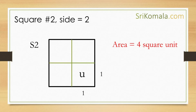Secondly, let us see square number 2, whose sides are 2 unit length, as shown in the diagram. Then, as can be understood from the diagram, by counting the number of unit squares inside square number 2, therefore the area of square number 2 is 4 unit squares.